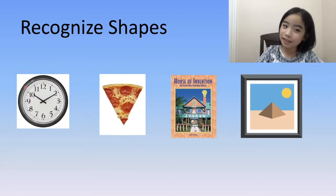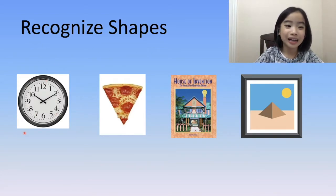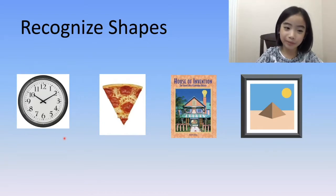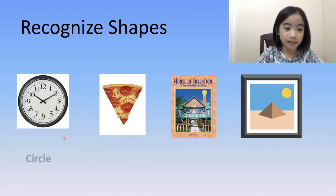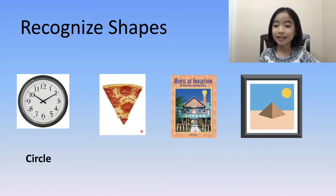First, we see a clock. A clock is a round shape. This is called a circle.